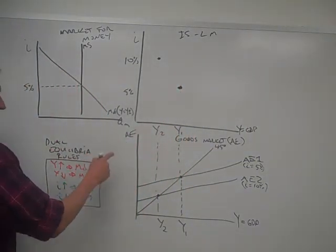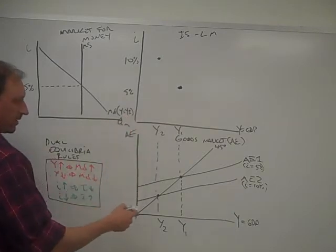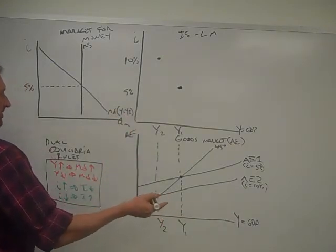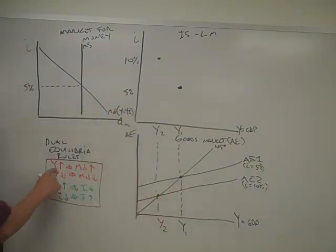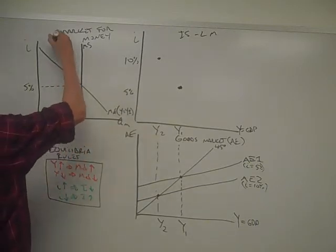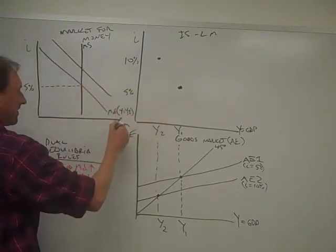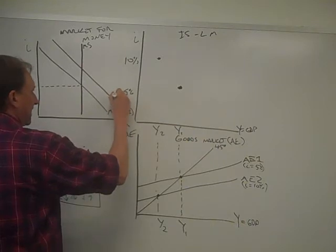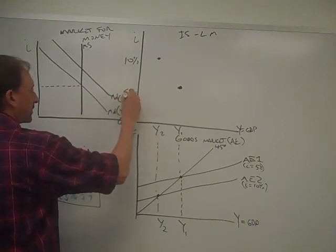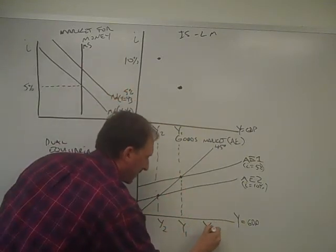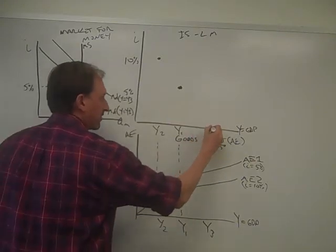Let's change this. Let's say we go from Y1 to Y3. Y3 is $400 billion. We know if Y goes up, MD is going to go up. So let's increase this here, and this is going to be MD if Y equals Y3. I'll put Y3 on here just for reference.